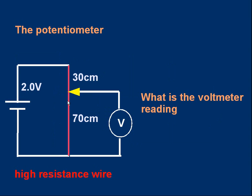Here's a problem. Suppose we have a cell with two volts EMF. And supposing the sliding contact is positioned so that there's a 30 centimeter length of wire on one side and a 70 centimeter length on the other. And we connect the voltmeter as shown. What do you think the voltmeter reading is? If you want to pause the video, you can try that for yourself.